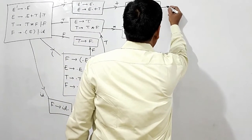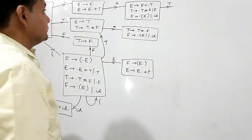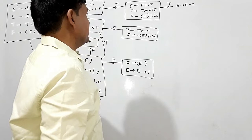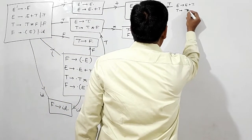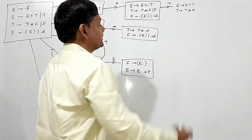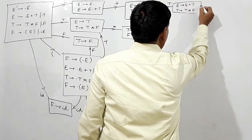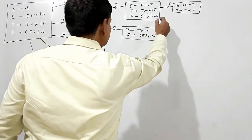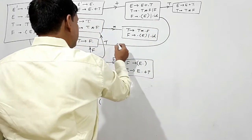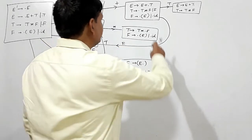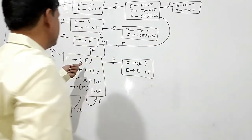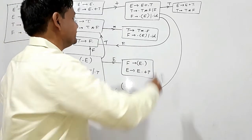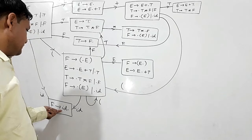If I read T here, E is giving me E plus T dot, and T is giving me T dot star F. This is one state. If I read F here, T is giving me F dot — so this transition comes here. If I read open bracket, this transition comes here. If I read this identifier, F is giving ID dot — this transition is here.